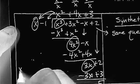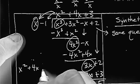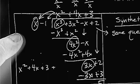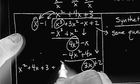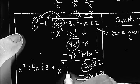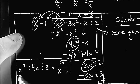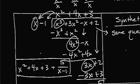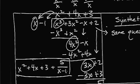Distribute the negative 1 and add. So, my answer to this is x squared plus 4x plus 3. But instead of putting R5, I'm going to put plus 5 over x minus 1.